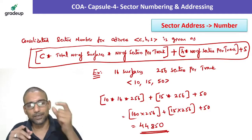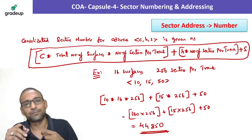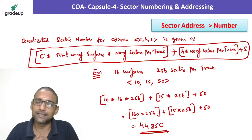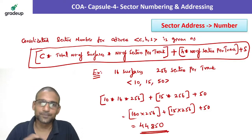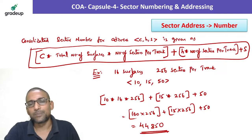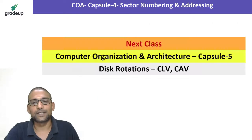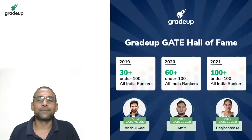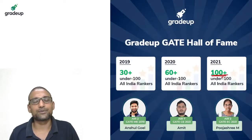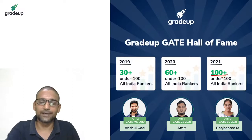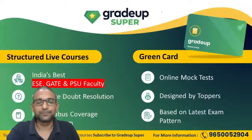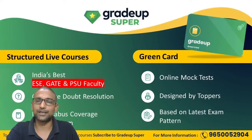I hope how the sectors are numbered, how the address is given, how this translation happens is clear with this capsule. Stay tuned and keep waiting for the next capsule that is CLV and CAV disc rotations. This is our grade up gate hall of fame, 100 plus grade up students achieved under 100 in 2021. Take super subscription and enjoy all the structured live courses.